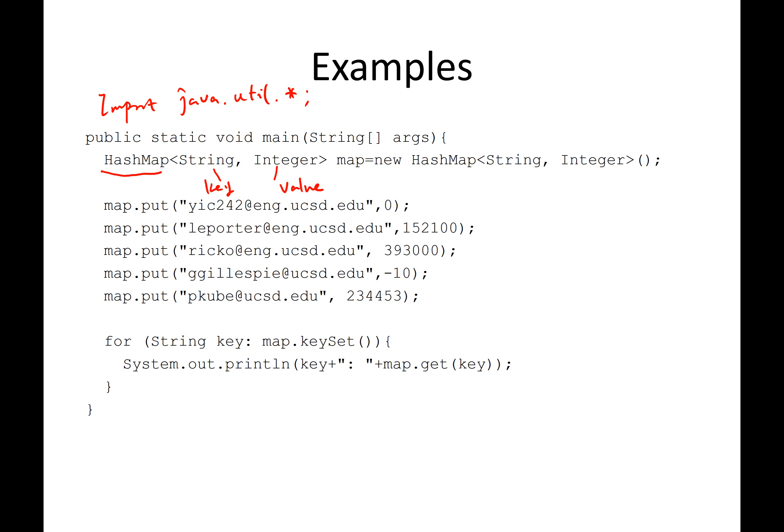And then you can start to use put method to put things into the map. So as you can see, we're probably looking at email to salary. For example, for me, my salary is zero. Leo Porter, his salary is 152. Rick Hort, super rich. Gary Gillespie, negative value. Just for fun. And then you put in a lot of data in there.